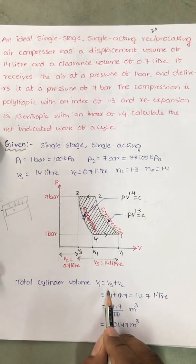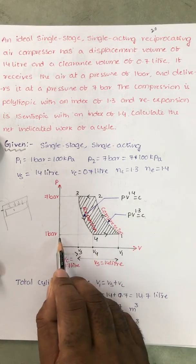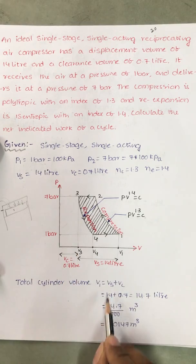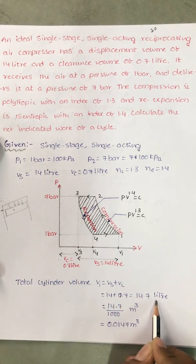So total cylinder volume V1 is equal to clearance volume Vc plus swept volume Vs. 14 plus 0.7 is 14.7 liter.